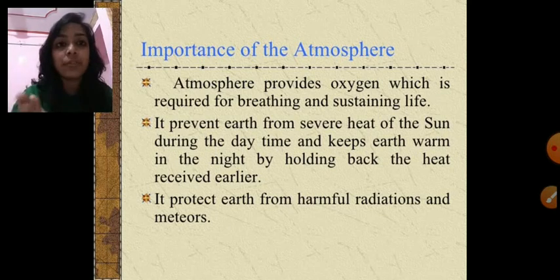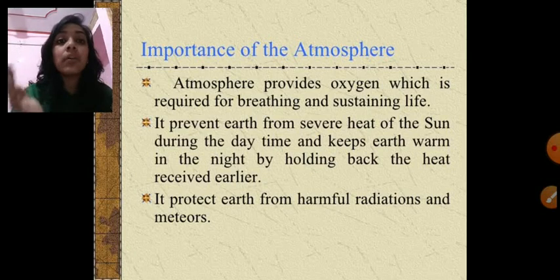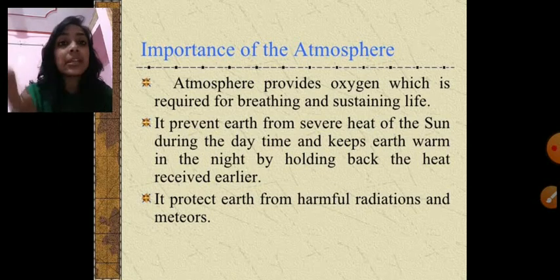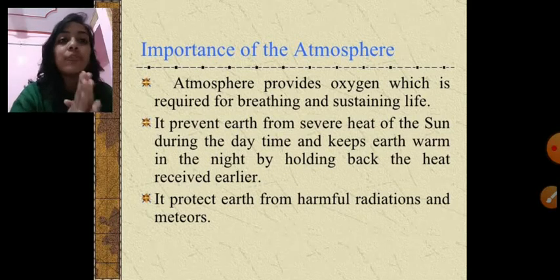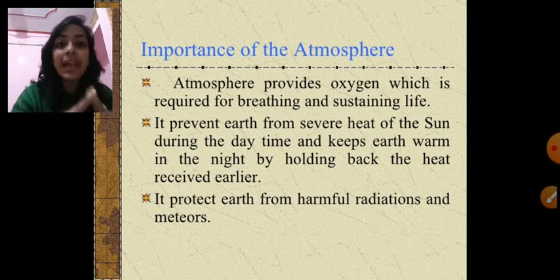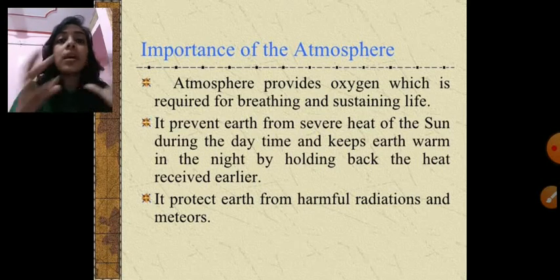Next, the atmosphere prevents the earth from the severe heat of the sun. The atmosphere is a layer that covers the earth and saves us from the very hot rays of the sun during the daytime, and keeps the earth warm during the night. During the night, the rays retained by the earth make it warm.